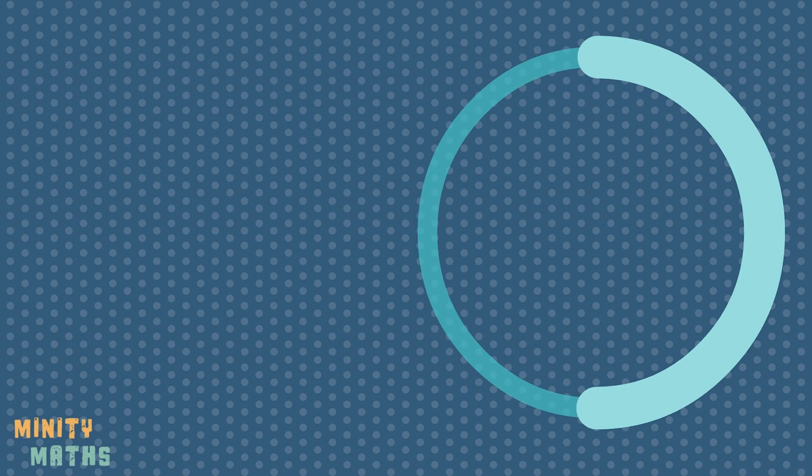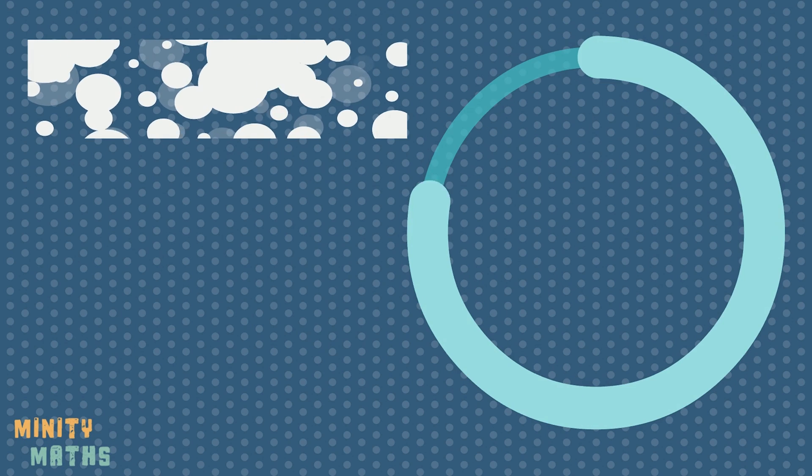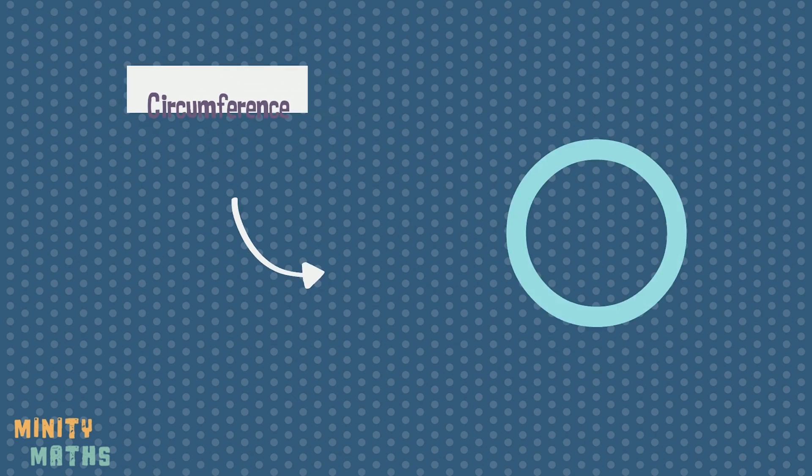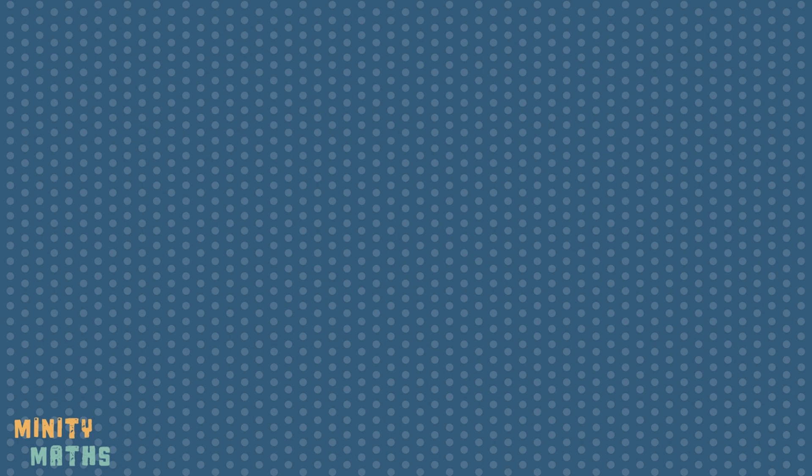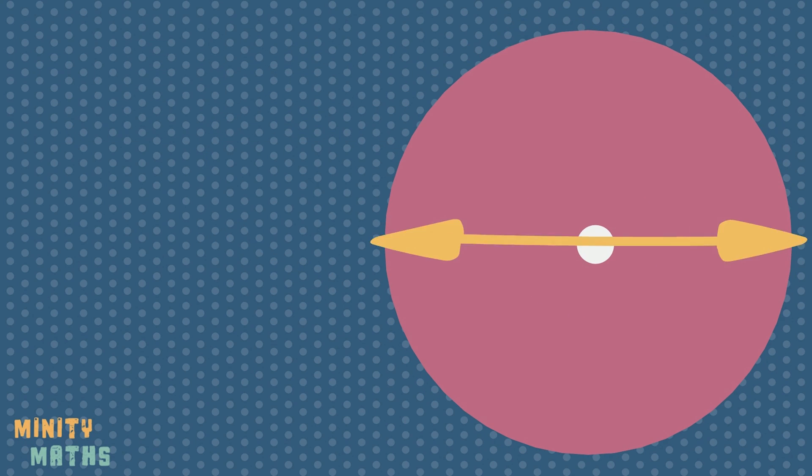The circumference is the boundary of a circle and refers to the distance around the edge. If we are given the length of the diameter or radius, we can calculate the length of the circumference.